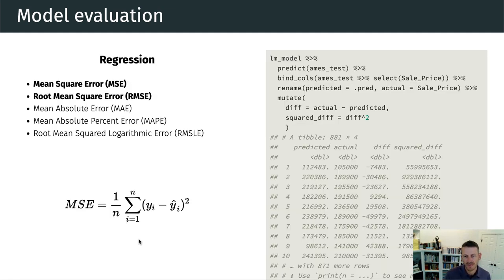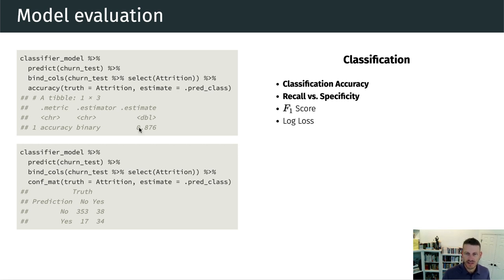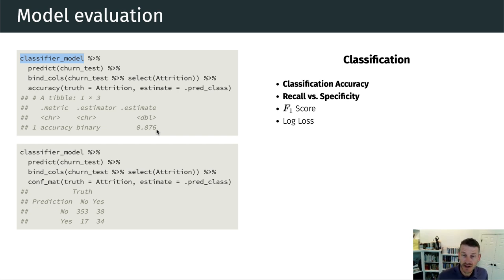For regression problems, mean squared error and root mean squared error are the most common metrics we'll see. For classification, we typically use classification accuracy — in a binary response, how many times do we predict accurately versus mispredicting. Our logistic regression classifier model has an accuracy rate of 0.876, meaning about 88% accuracy.